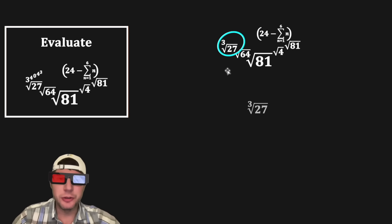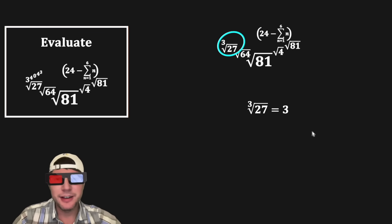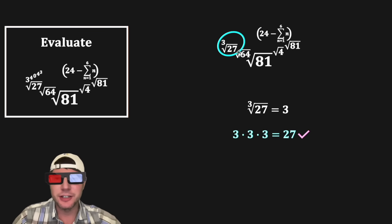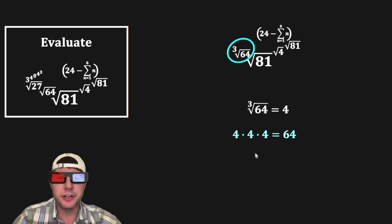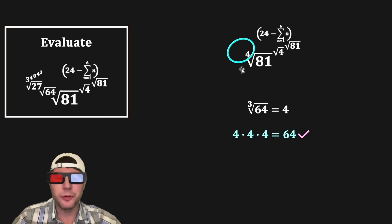Now we know that this is a cube root of 27, and the cube root of 27 is equal to 3, because 3 times 3 times 3 is 27. So this whole thing changes into 3. Now we can do the cube root of 64. The cube root of 64 is equal to 4, because 4 times 4 times 4 is 64. So this whole thing changes into 4.